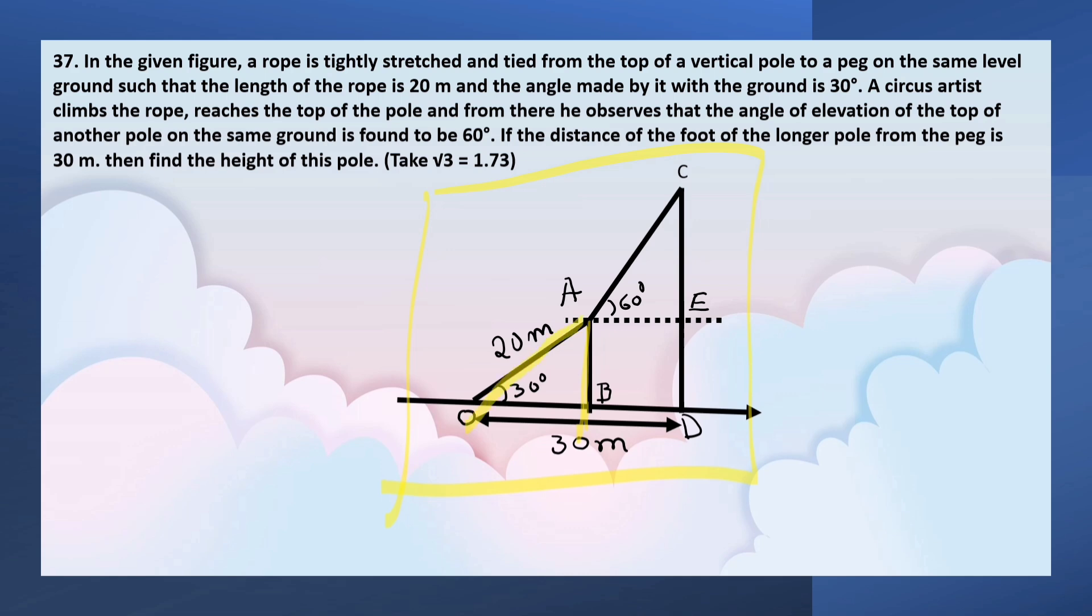The length of the rope is 20 meters and the angle made by it with the ground is 30 degrees. A circus artist climbs the rope, reaches the top of pole AB, and observes another pole CD with an angle of elevation of 60 degrees.